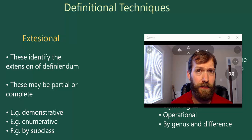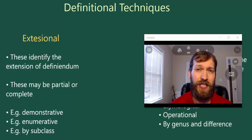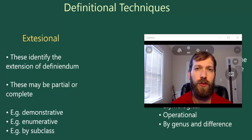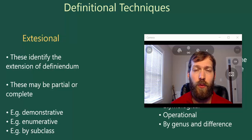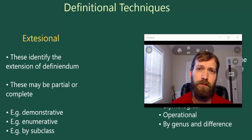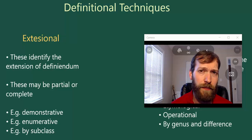So there are extensional definitions, and not surprisingly, extensional definitions go about assigning meaning to a word by relying on the extension of the definiendum. So a word will refer to or have so many members in its extension, and then we do something like list off that extension.